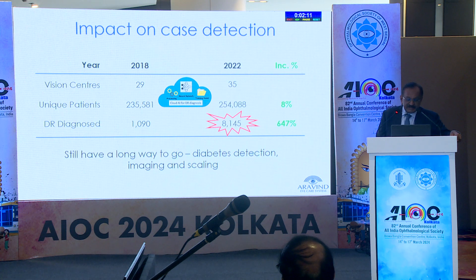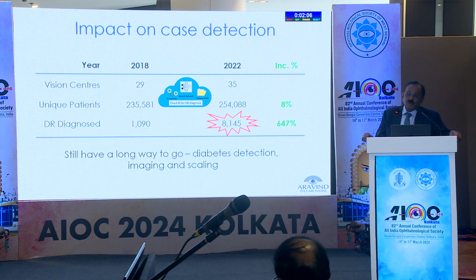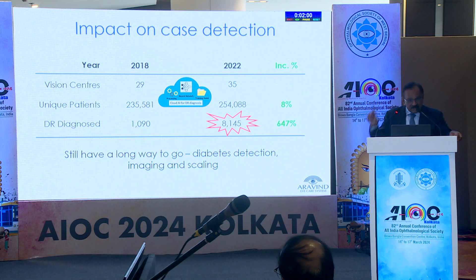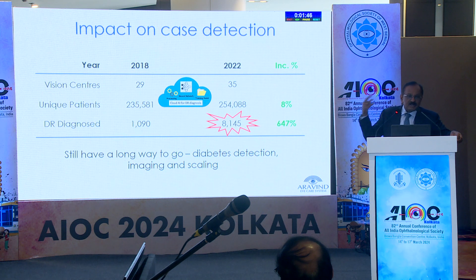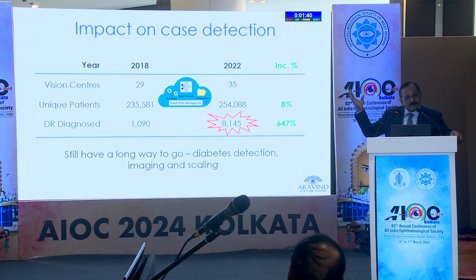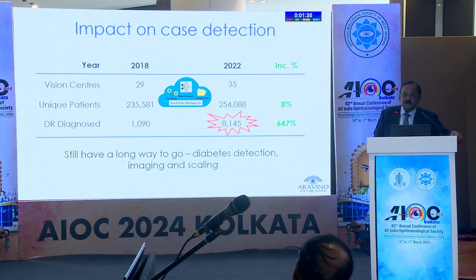Looking at our data: before AI was introduced in our screening program, we screened about 200,000 patients in one year — in 2018 — and DR diagnosis was around 1,090 patients. In 2022, when fully integrated with AI, the number increased tremendously — eight times — to identify diabetic retinopathies we were previously missing. We are still trying to understand all the reasons for this increase.